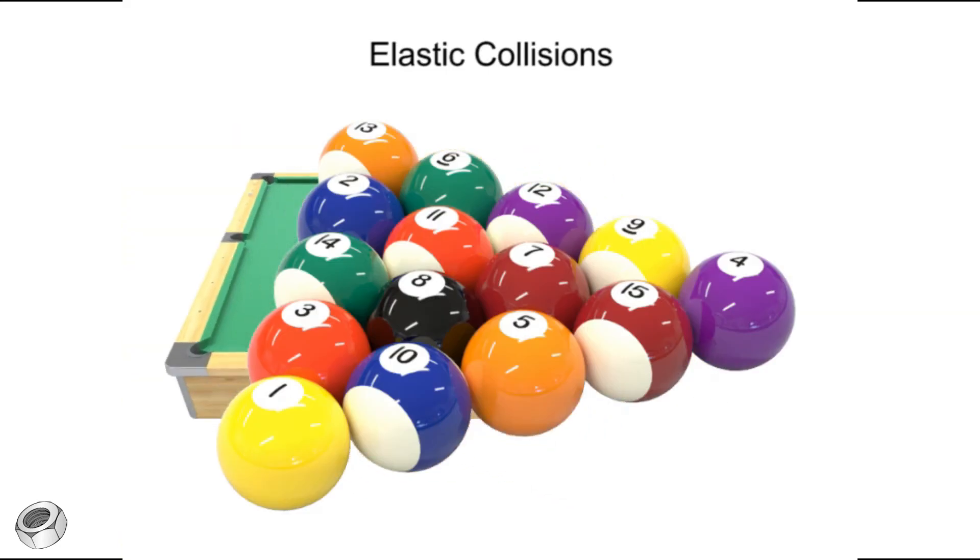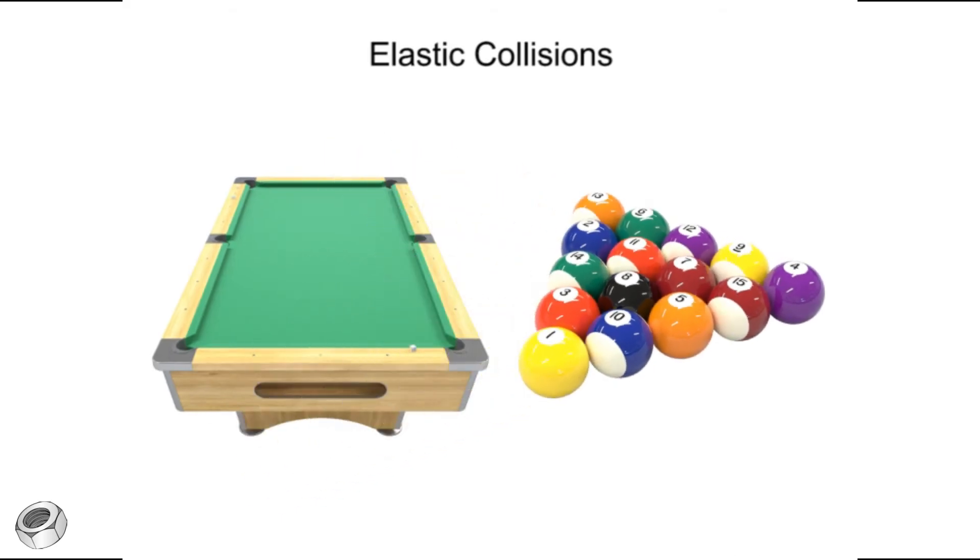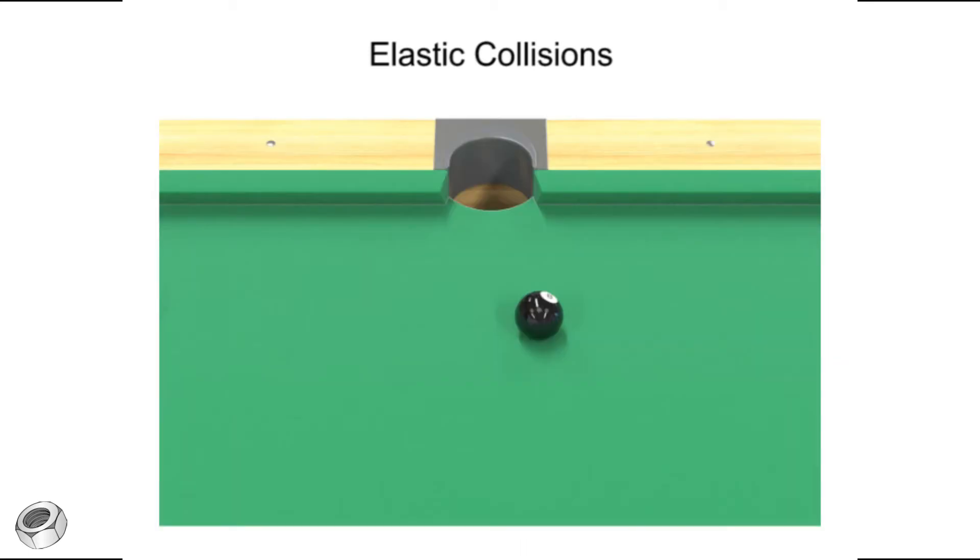Pool tables and billiard balls are designed to reduce the effects of friction, resulting in close to ideal elastic collisions. When the cue ball hits the resting eight ball, it sets the eight ball in motion. Having transferred all of its momentum and kinetic energy, the cue ball comes to a rest.